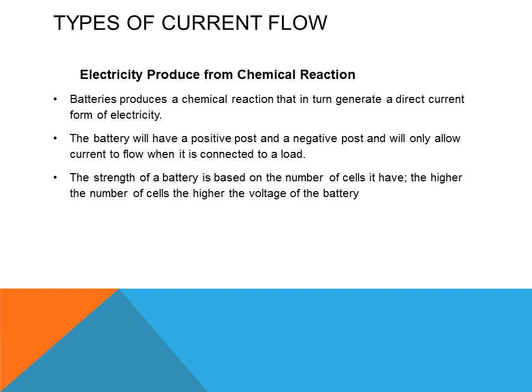Electricity produced from chemical reactions: batteries produce a chemical reaction that in turn generates direct current. Electricity is formed by the chemicals inside the battery connecting to the plates, and when a load and conductors are connected, it allows current to flow to the load. Batteries have a positive pole and a negative pole and only allow current to flow when a load is connected. The strength of the battery is based on the number of cells — the higher the number of cells, the higher the voltage.